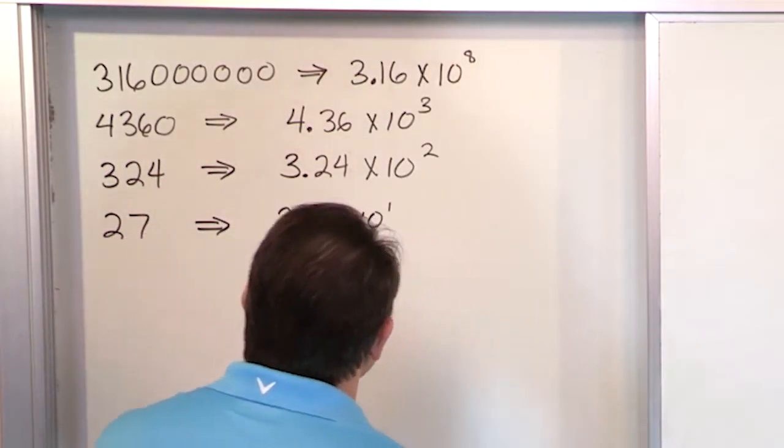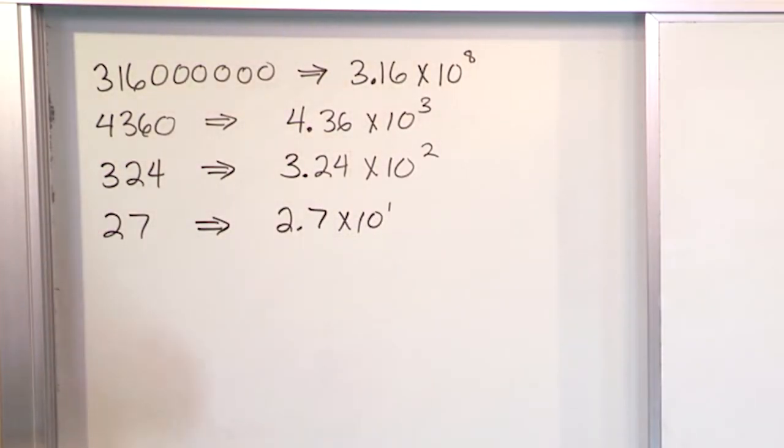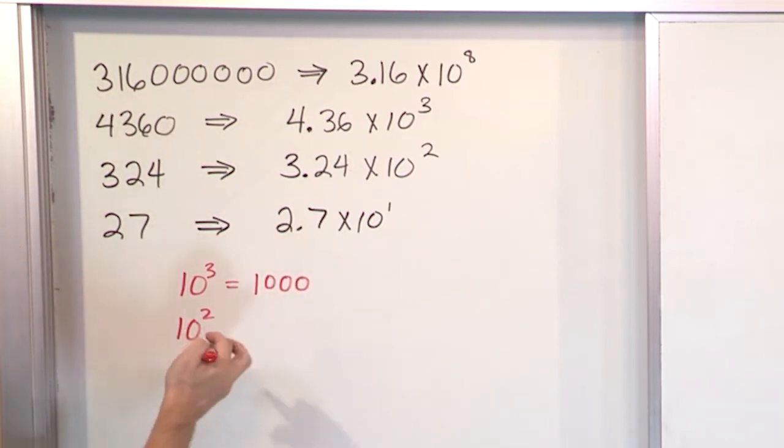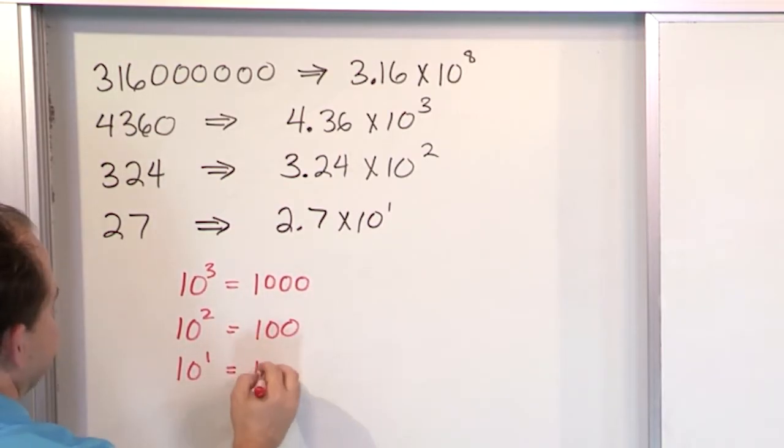But the question is, why does it work? And the reason is because, remember from exponent lecture, 10 to the 3, as an example, is 10 times 10 times 10. That's 1,000. 10 to the power of 2 is 10 times 10. You all know that that's equal to 100. And 10 to the power of 1 just means you don't multiply it really by anything, so it's just 10.